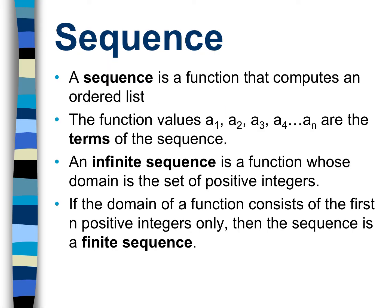A sequence is a function that computes an ordered list. The function values a sub 1, a sub 2, a sub 3, a sub 4, all the way up to a sub n — these are the terms of the sequence. Those little subscripts are labels telling you the position, so a sub 1 is the first term, a sub 2 is the second term, and so on.